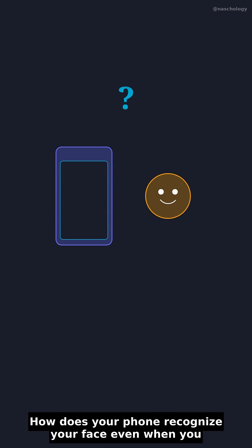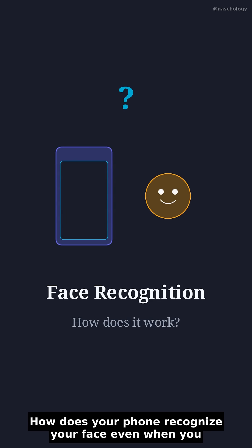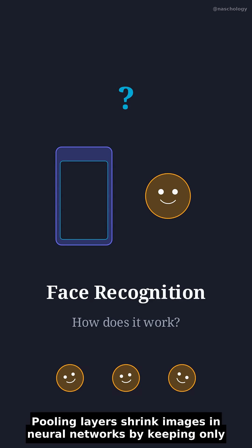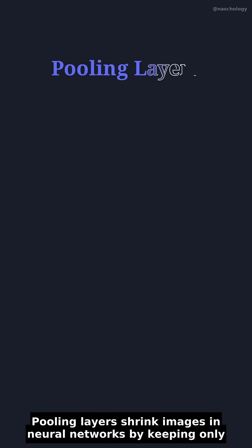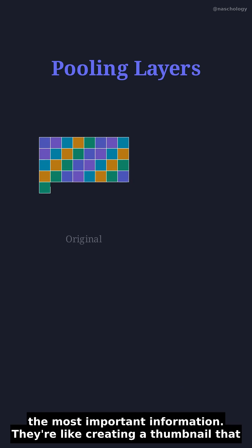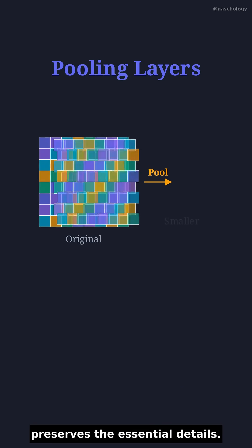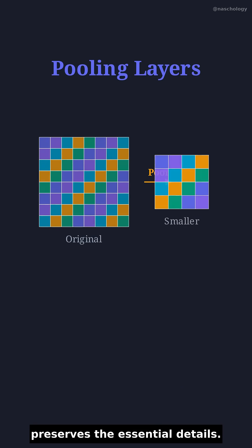How does your phone recognize your face even when you tilt your head? Pooling layers shrink images in neural networks by keeping only the most important information. They're like creating a thumbnail that preserves the essential details.